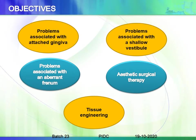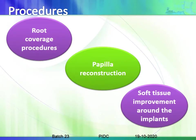The main objectives are: dealing with problems associated with attached gingiva, problems associated with a shallow vestibule, problems associated with an aberrant frenulum, aesthetic surgical correction, and tissue engineering. Under this we will be seeing procedures such as root coverage procedures, papillary reconstruction, and soft tissue improvement around implants.